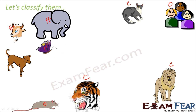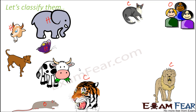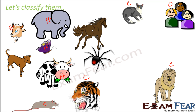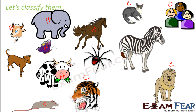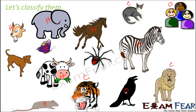Butterflies are herbivores because they feed on nectar from flowers. Cows are also herbivores as they feed on plants. A horse is again a herbivore. A spider is an omnivore because it eats tiny insects as well as plant matter. A zebra is a herbivore, feeding only on plants.